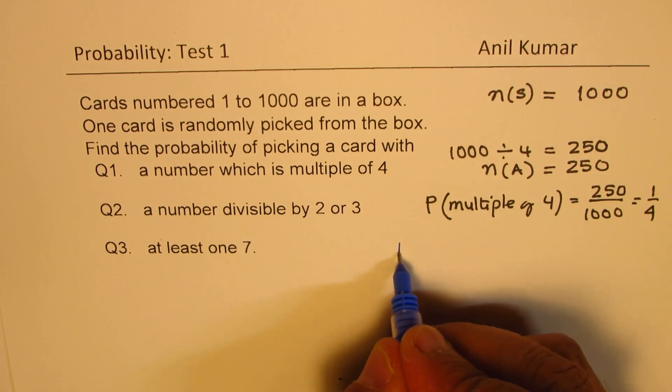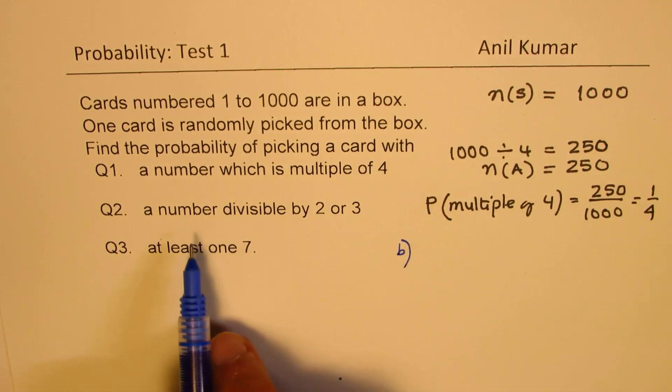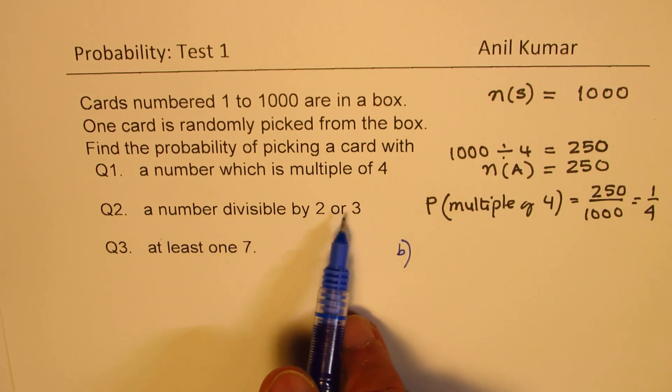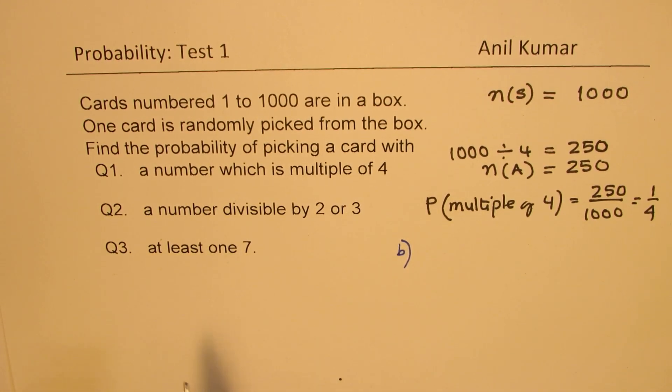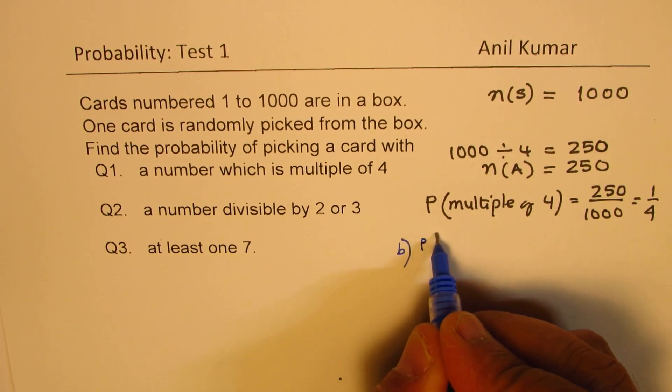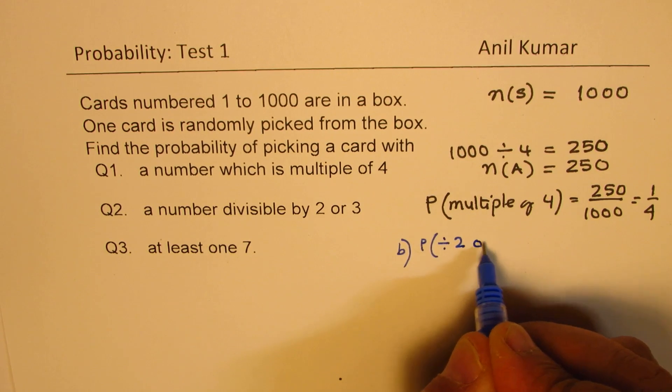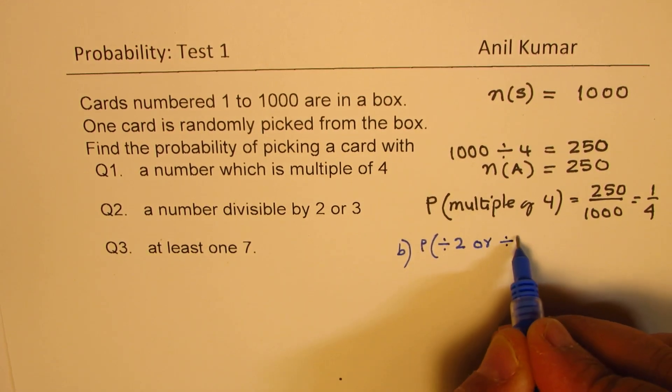Now, let's look into part B. In part B, we are talking about a number which is divisible by 2 or 3. So it is a probability, we are looking for divisible by 2 or—means union—or 3.